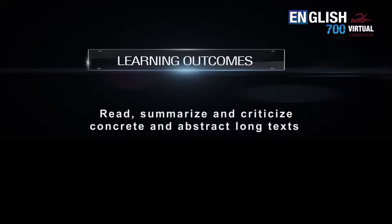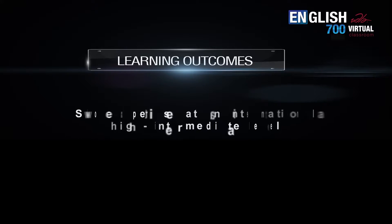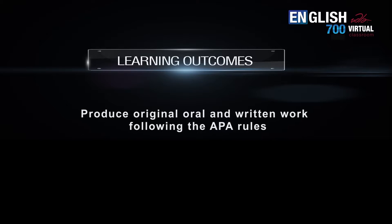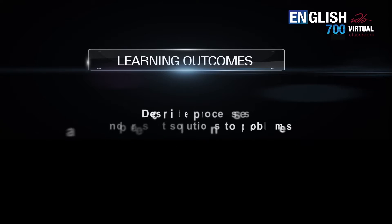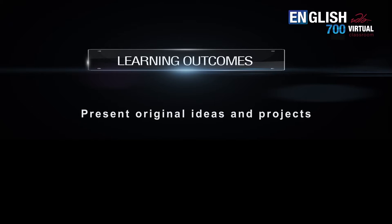By the end of this level, you will be able to read, summarize and criticize concrete and abstract long texts, show expertise at an international high intermediate level, argue opinions, compare and contrast information, produce original oral and written work following APA rules, describe processes and present solutions to problems, compare and contrast evidence and circumstances, and present original ideas and projects.